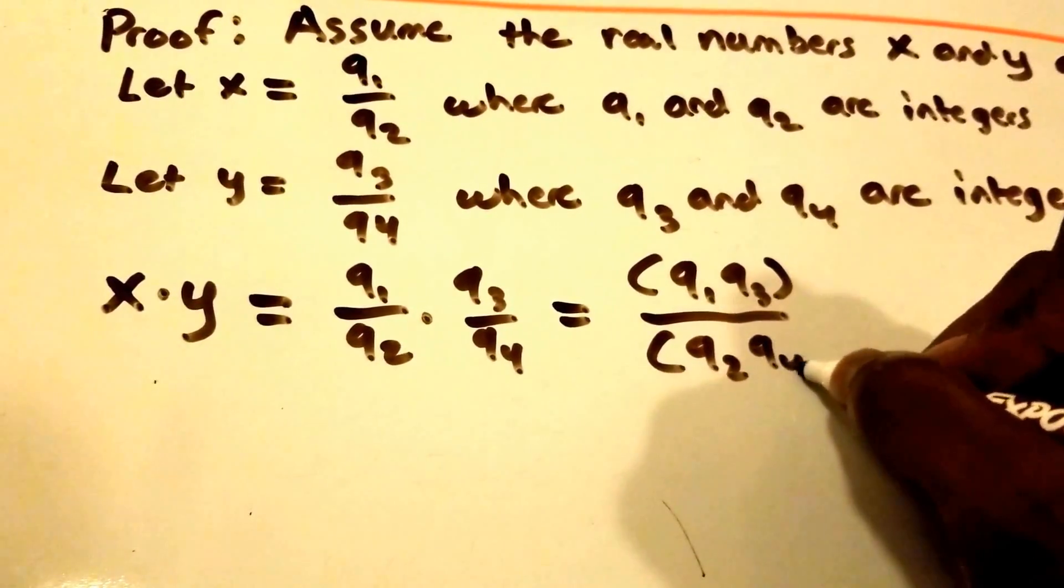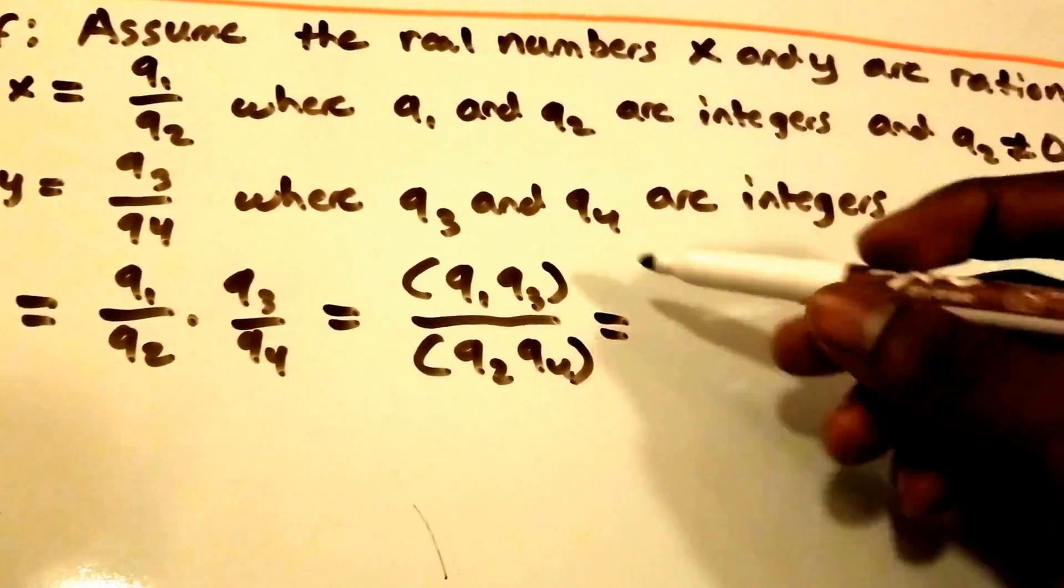This equals q1 times q3 over q2 times q4. And now we can say q1 times q3 is equal to some other integer value.